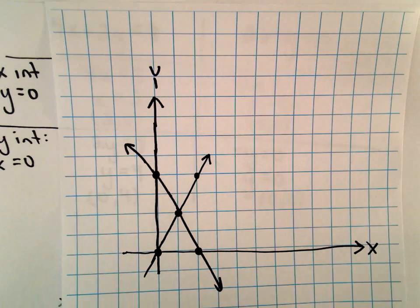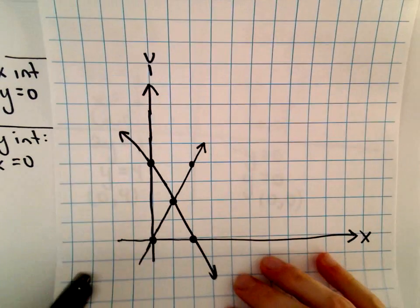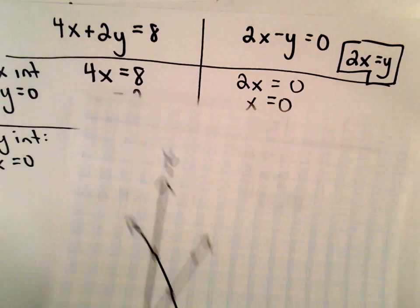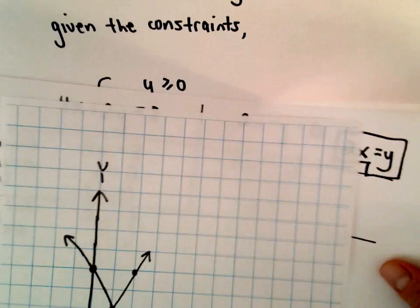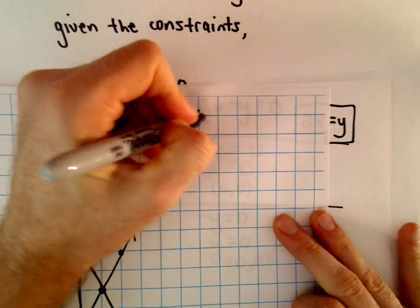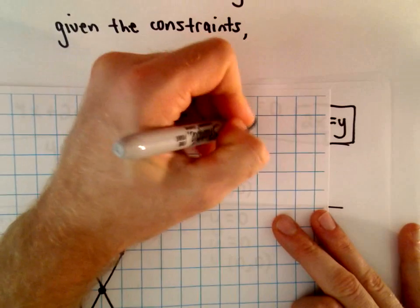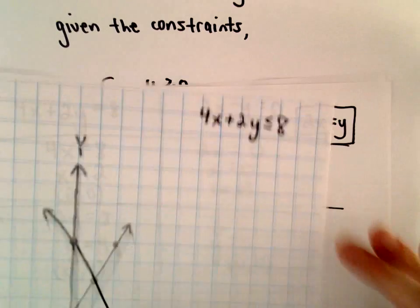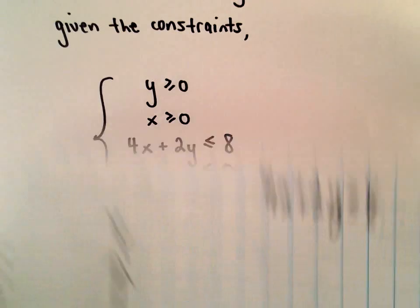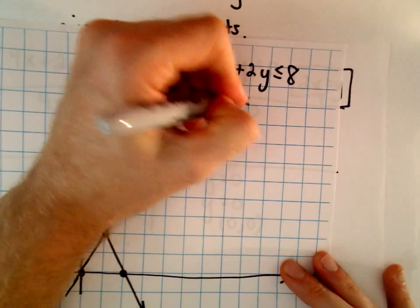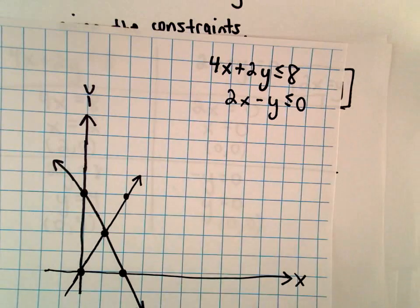Okay, so now we simply have to determine the feasible region. So what I'm going to do is use a test point. Again, keeping in mind that this has to be in the first quadrant. So 4x plus 2y has to be less than or equal to 8, and our other inequality was 2x minus y less than or equal to 0.